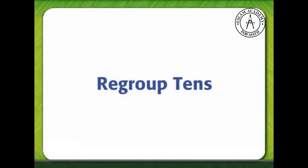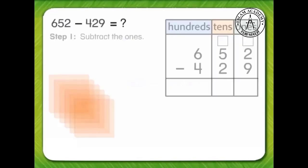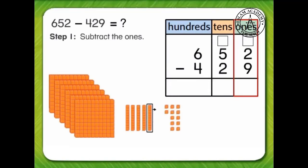Regroup 10s. Find 652 minus 429. First, we can subtract the 1s. We cannot subtract 9 from 2. We'll regroup 1 ten as 10 ones.